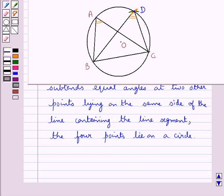So according to this result that we have just stated, we get that the line segment joining the points B and C subtends equal angles, angle CAB and angle BDC, at the two other points A and D lying on the same side of the line containing the line segment BC. So these four points,